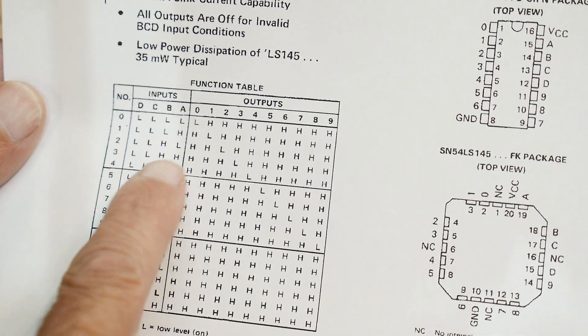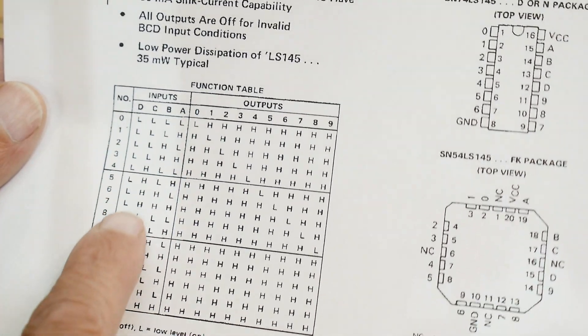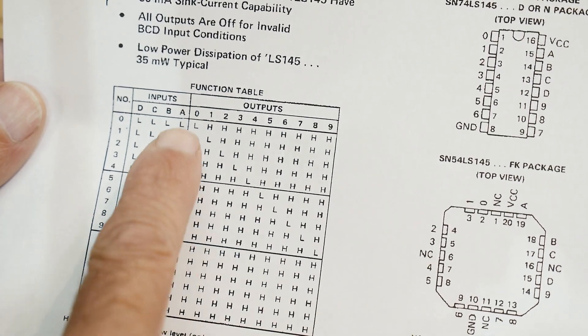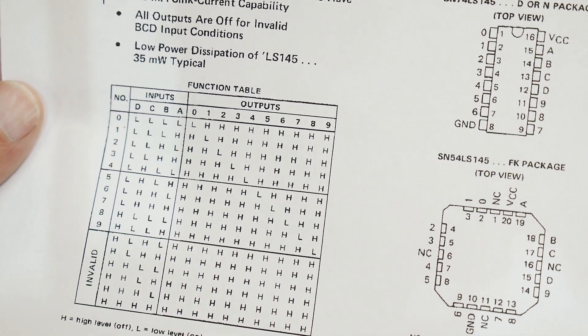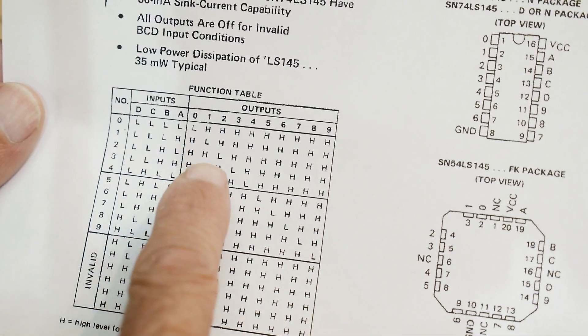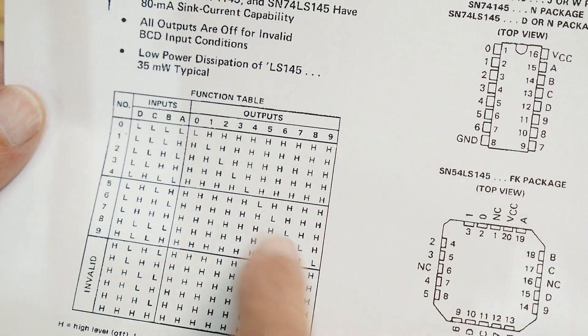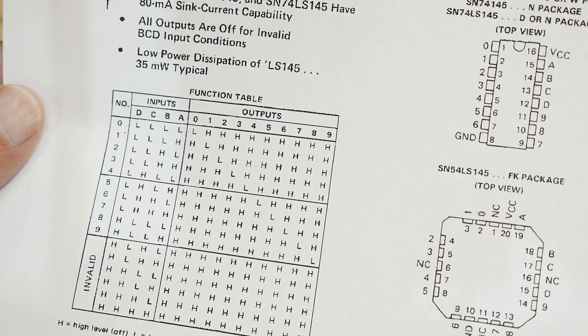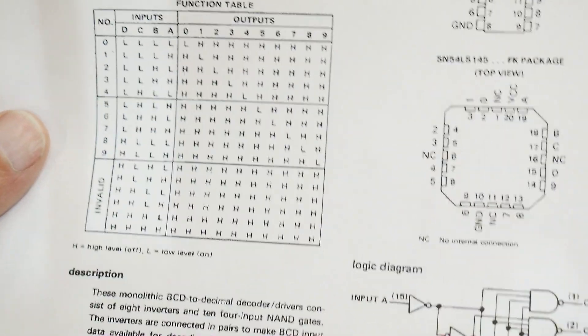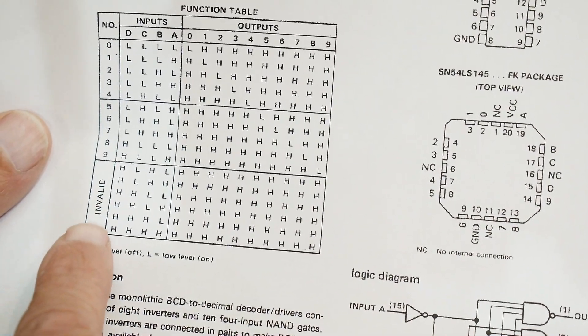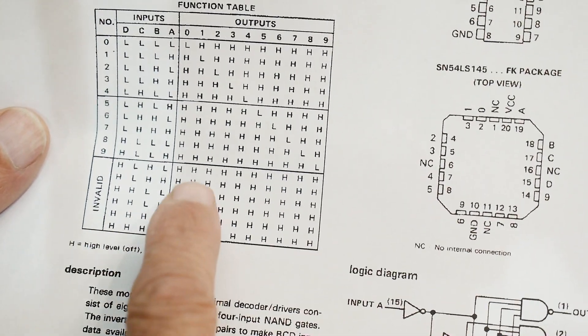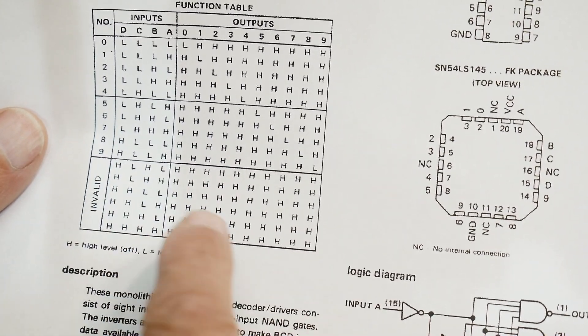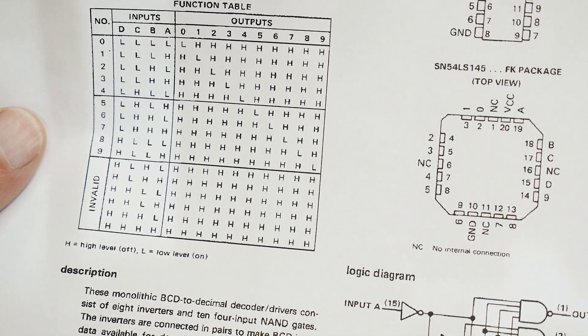Here's the binary code right here for ABCD inputs and then here's the outputs from zero is low, one is low, so it's low true. So zero one two three four five and you can see this diagonal that goes here, and then if you go above nine in binary here it says invalid. Yeah it doesn't make any sense so they just leave all the outputs high. If you put in something over here you just have a high on the output.